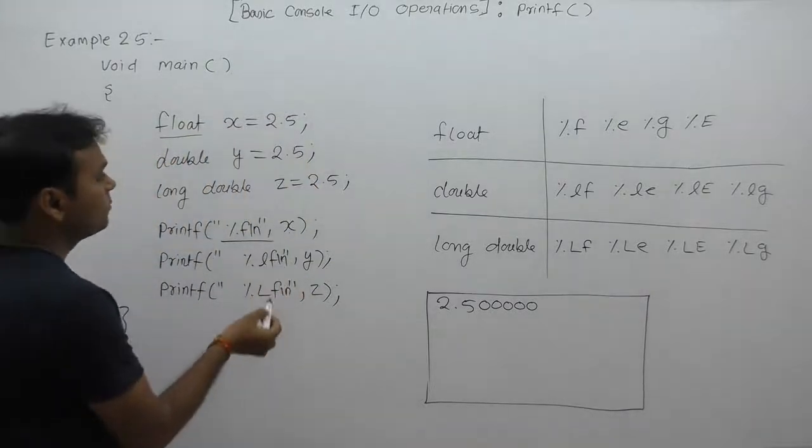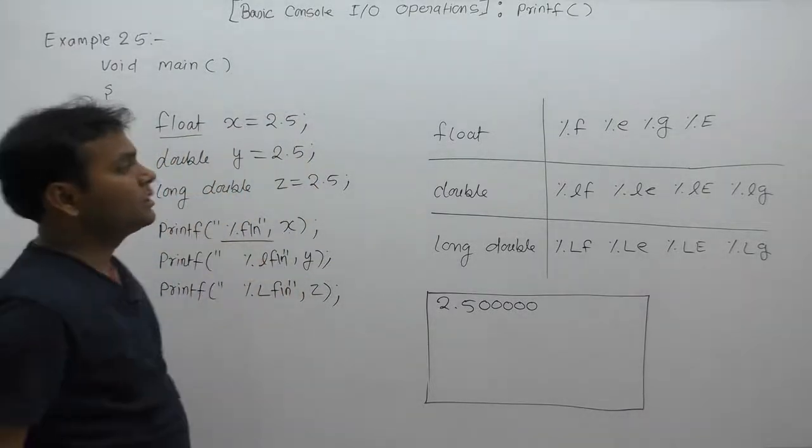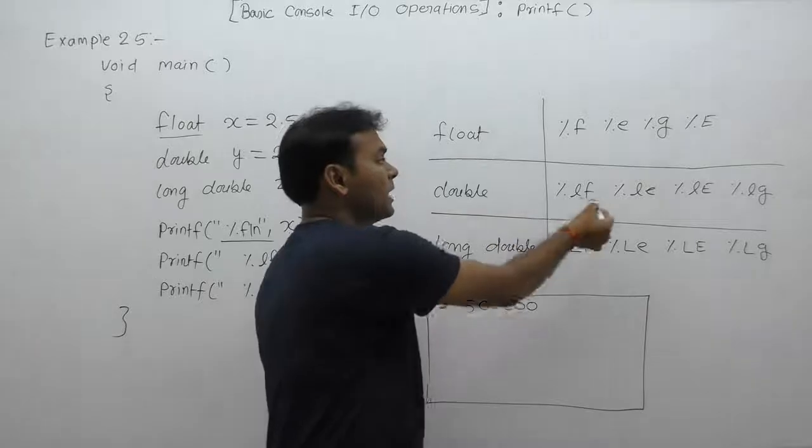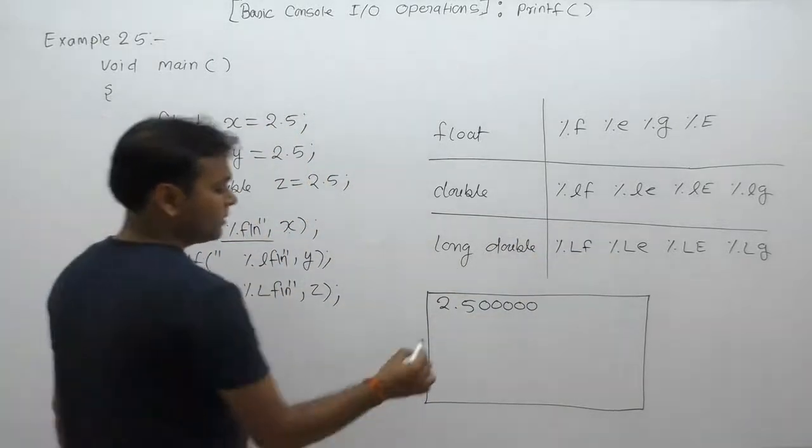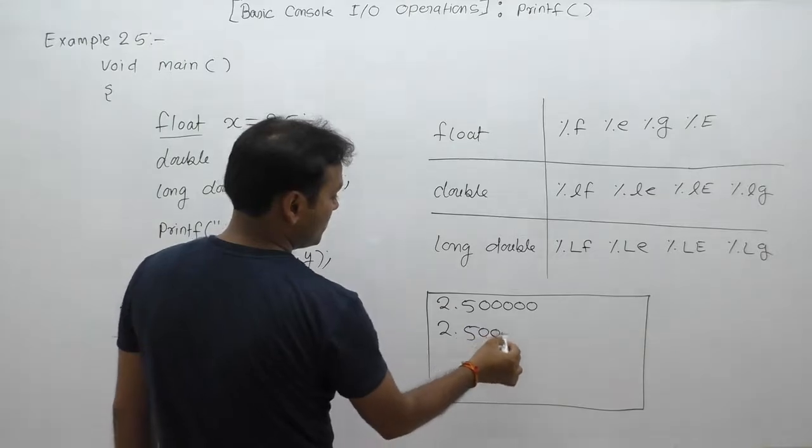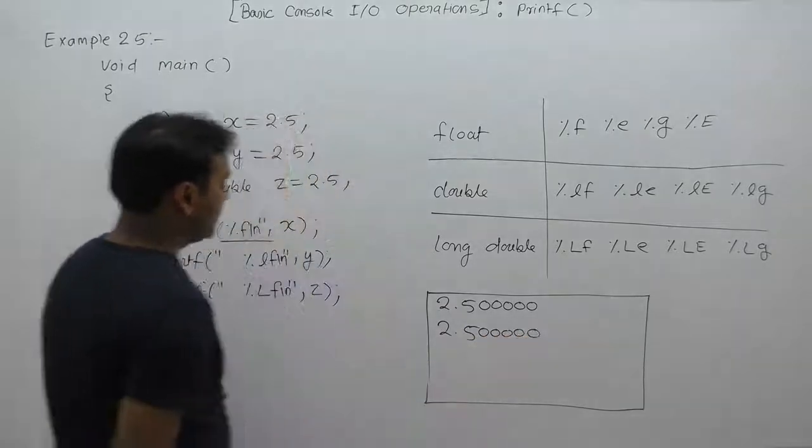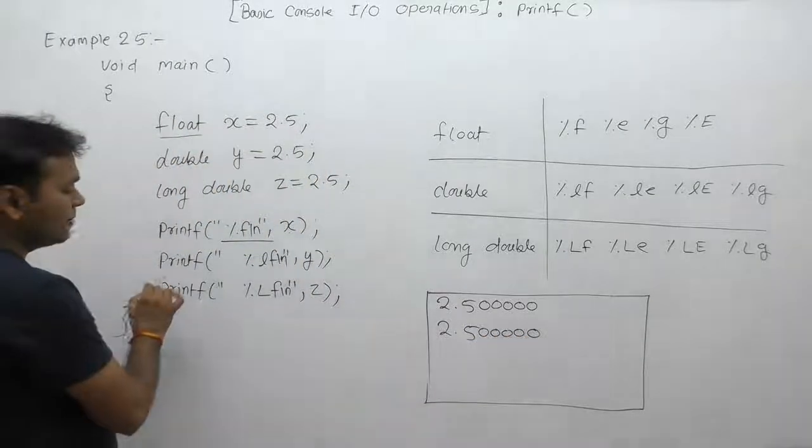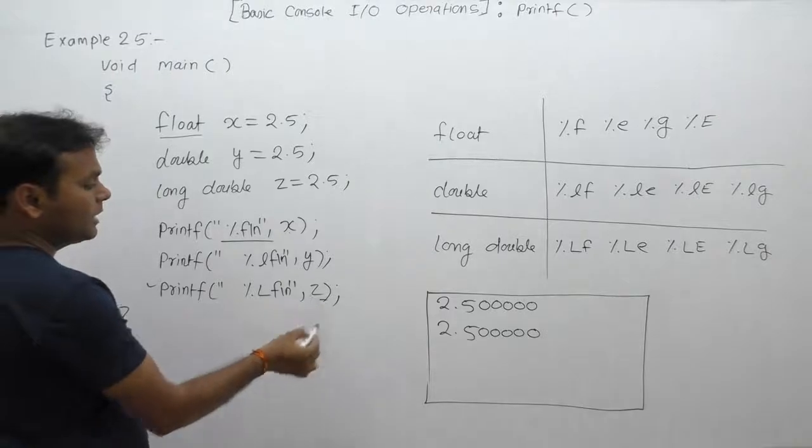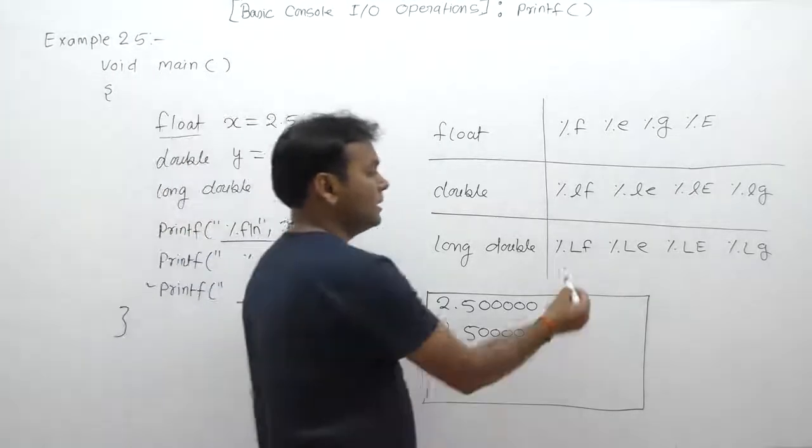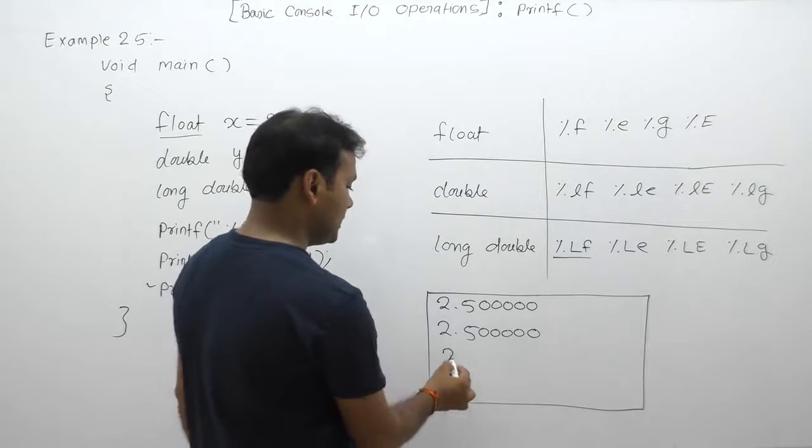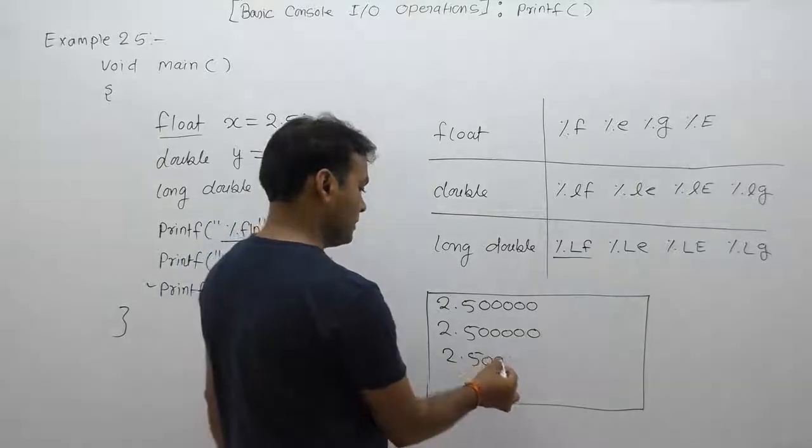Value of y: type of y is double, and the format specifier for double is %lf, therefore again 2.500000. In the last printf, we are supplying z as a long double value, therefore it is displayed using %Lf. Again, the result is the same in all cases.